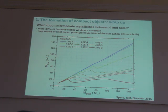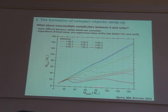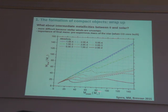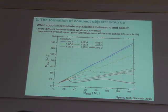This plot shows the pre-supernova mass of a star as a function of its initial mass for one possible stellar evolution model, with nine metallicities. There is a pretty monotonic trend with metallicity: more metal-poor stars have a larger final mass than more metal-rich ones. Metal-rich stars are shown in red, metal-poor stars in blue.